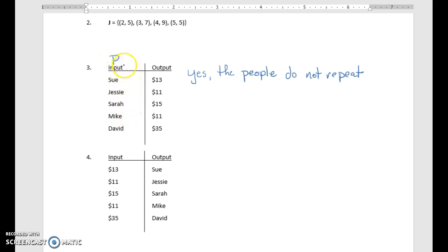The output of this is in some sort of dollar amount, so maybe it's m. We would indicate, remember, that this is M of p, where the output variable is on the outside of the parentheses and the input variable is on the inside of the parentheses.